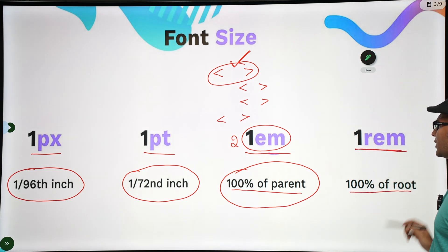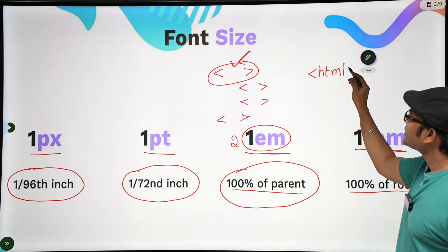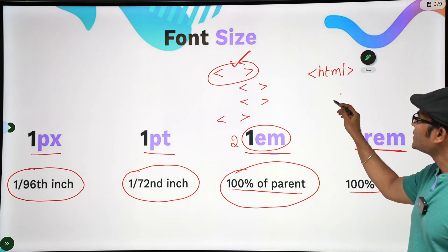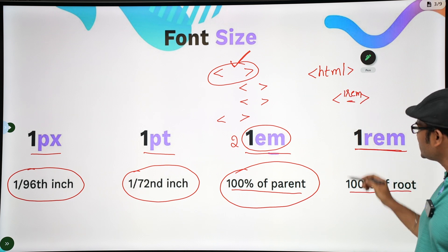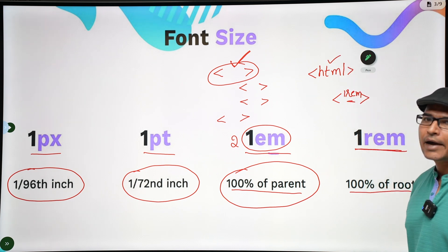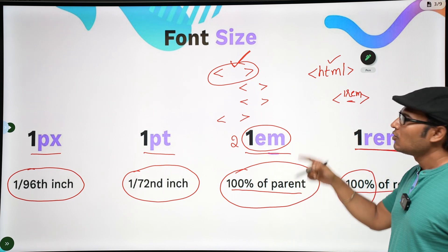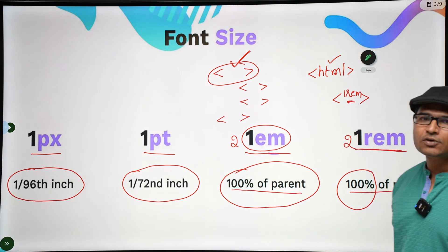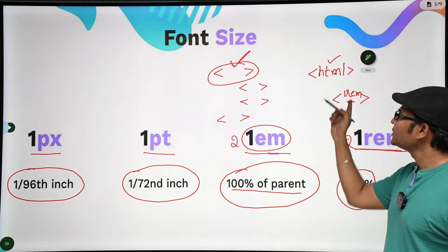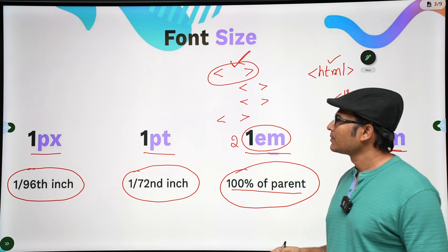One rem means 100% of the root. The root element for all elements is HTML - everything is present within HTML. So for any element, if you write 1rem, it means whatever size is applied to the HTML tag, you are taking 100% of it. If you write 2rem, it means 200% of the HTML size. Three means 300% of it.